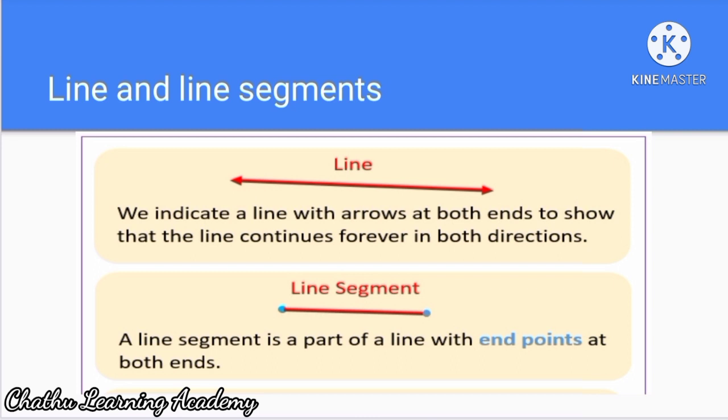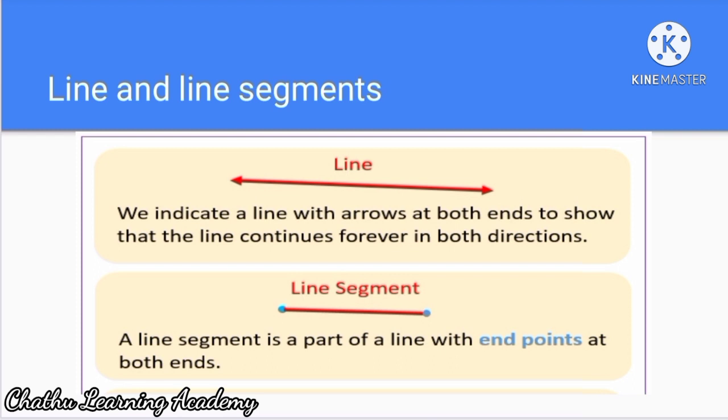Here, you can see, in a line, there are two arrowheads at both ends. It means it has no endpoints, it extends both sides indefinitely. In a line segment, you can identify two endpoints at both ends. Do you understand what I am saying? We can draw a line or the line segment using straight edge.